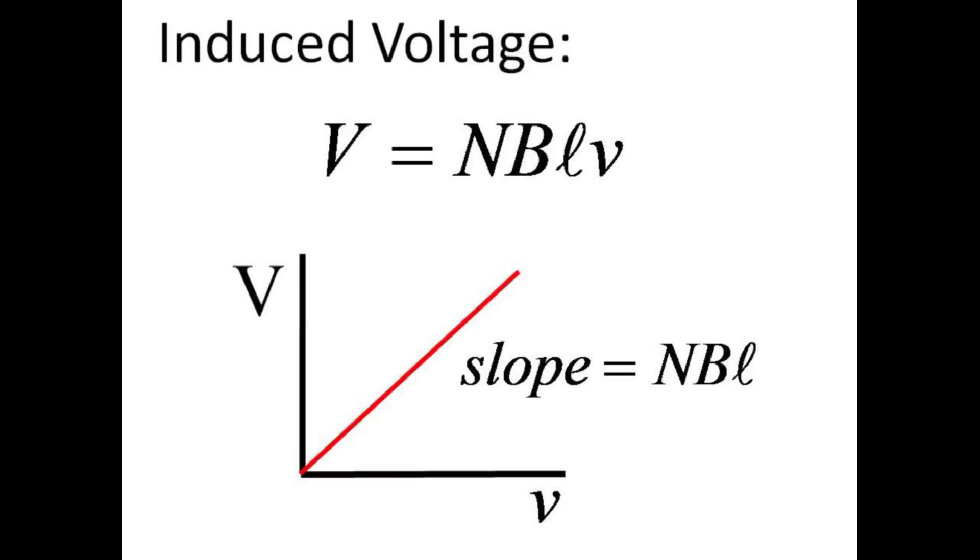A plot of voltage versus velocity should yield a straight line with a slope of N, B, L.